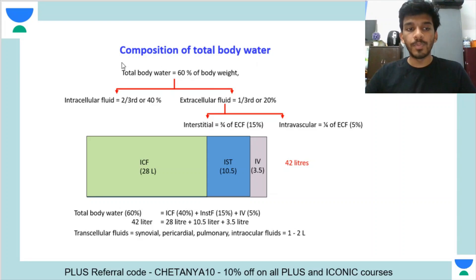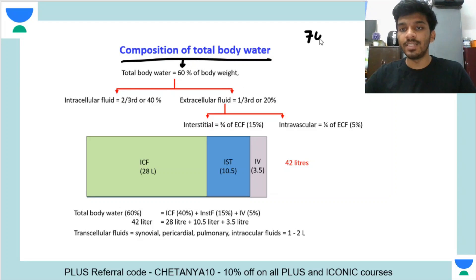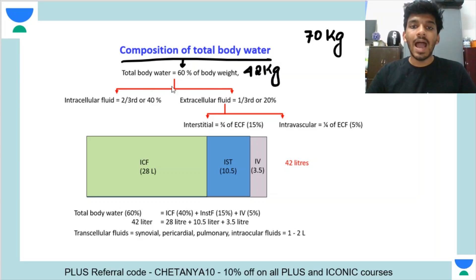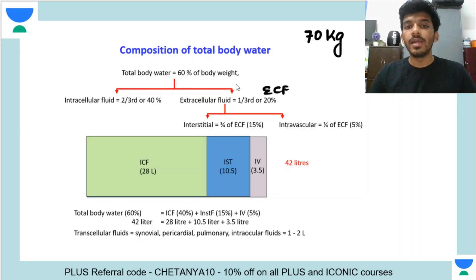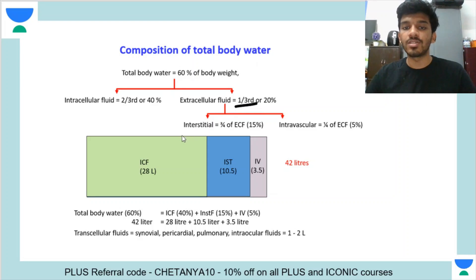So what is the composition of total body water? 60% of the total body weight is water. For a 70 kg man, that is 42 liters of total body water. Out of this 42 liters, two thirds is going to be intracellular fluid, and one third is going to be extracellular fluid. So two thirds — that is 66% — is intracellular fluid, and one third is extracellular fluid.